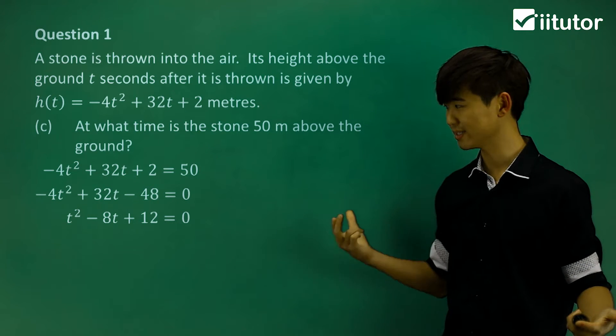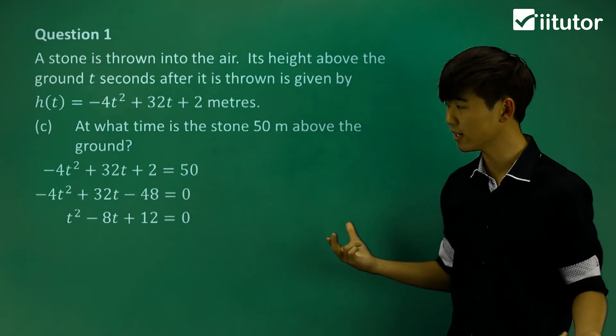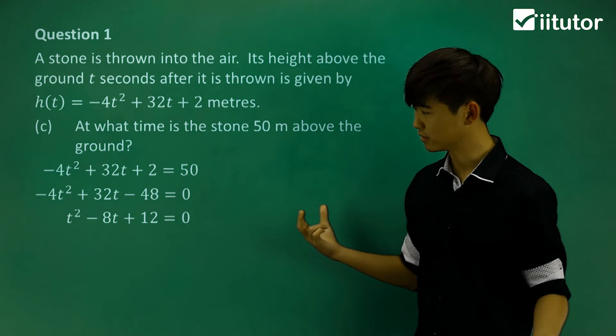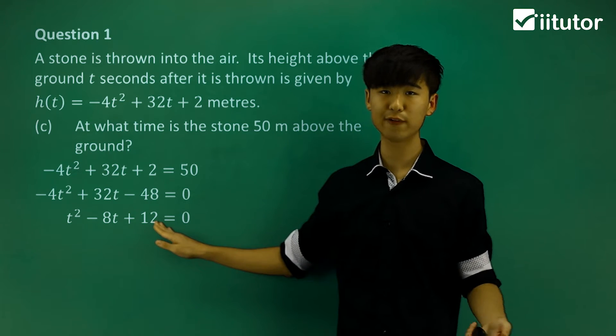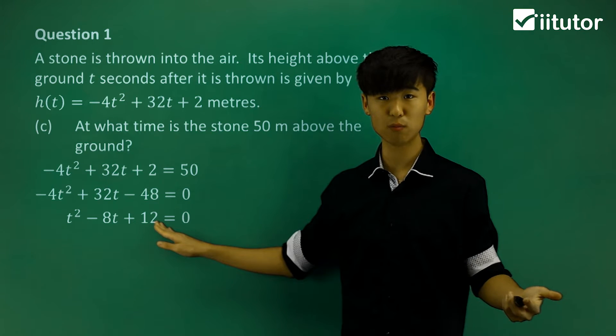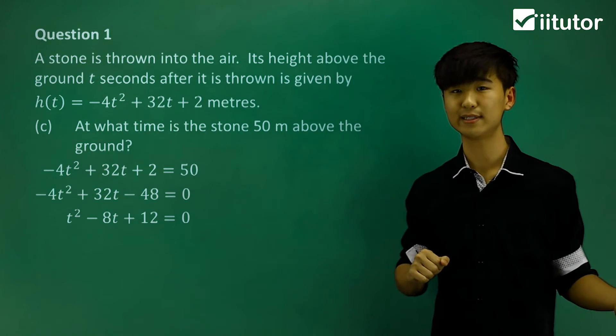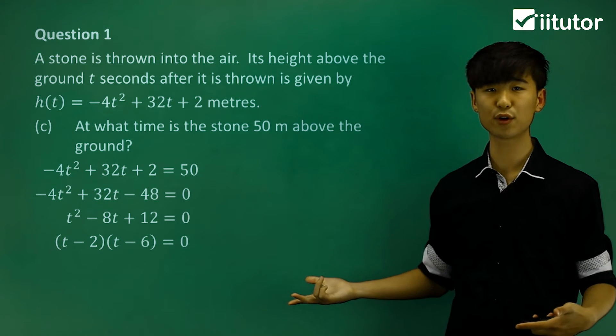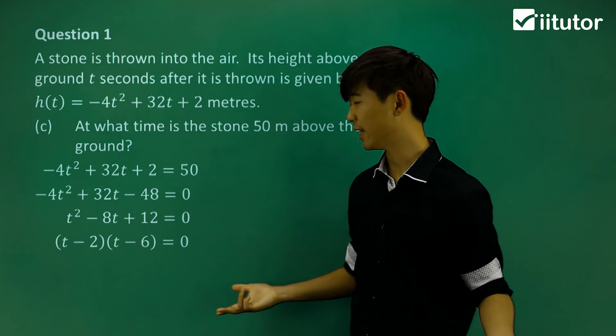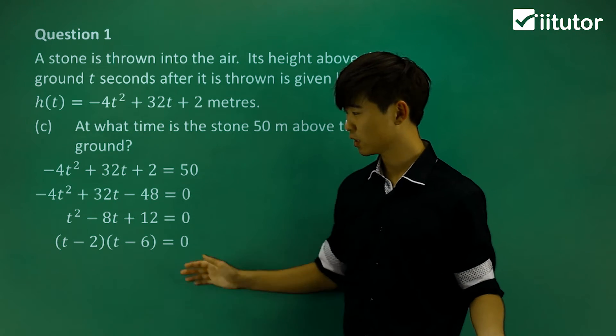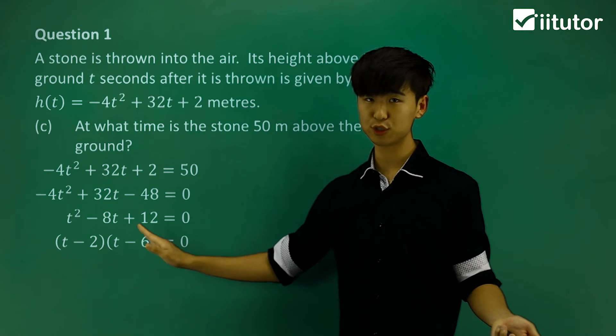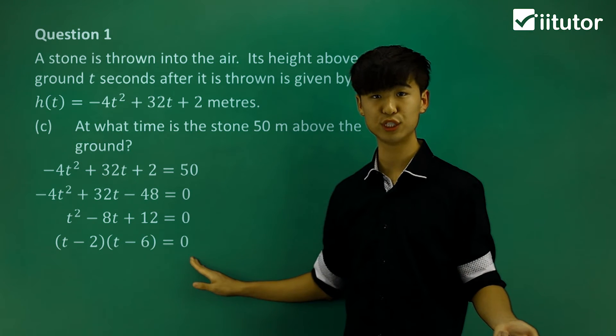To factorize t² - 8t + 12 = 0, we need two numbers with a product of 12 and a sum of -8. That's -2 and -6.